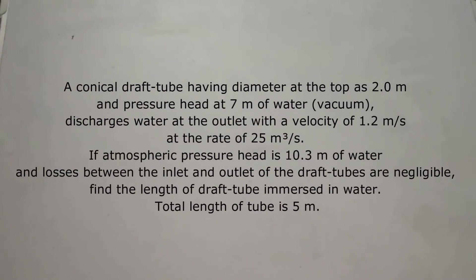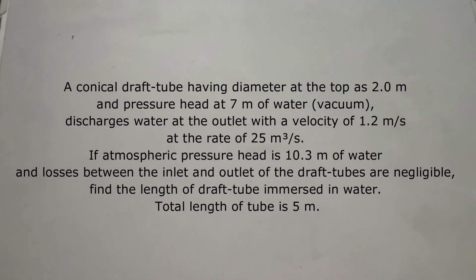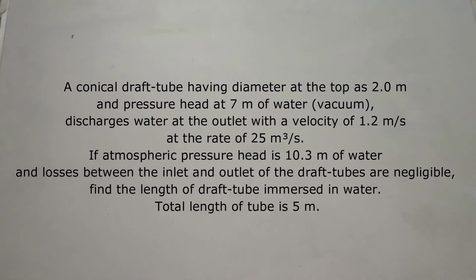Now we will look at a problem related to the draft tube. A conical draft tube having a diameter at the top of 2 meters and a pressure head of 7 meters of water vacuum discharges water at the outlet with a velocity of 1.2 meters per second at the rate of 25 cubic meters per second. The atmospheric pressure head is 10.3 meters of water and the losses between inlet and outlet are negligible. We need to find the length of draft tube immersed in water; the total length of the tube is 5 meters.